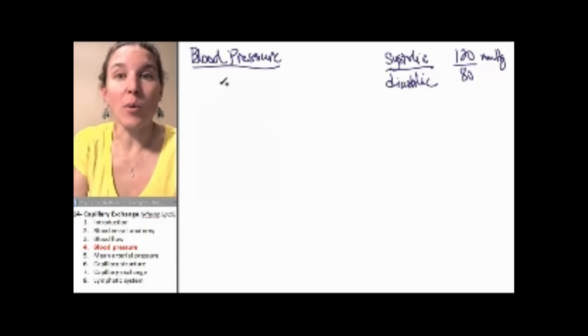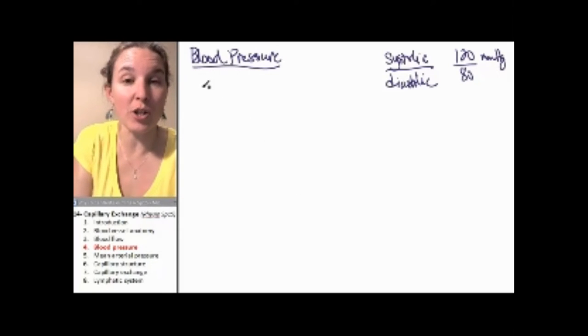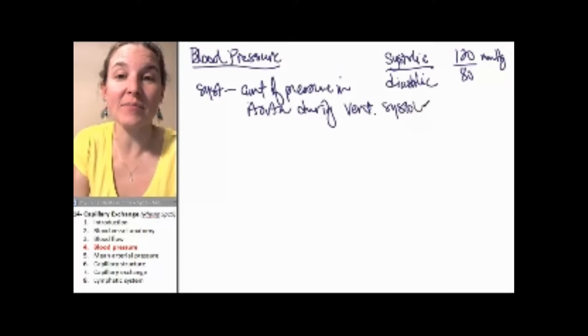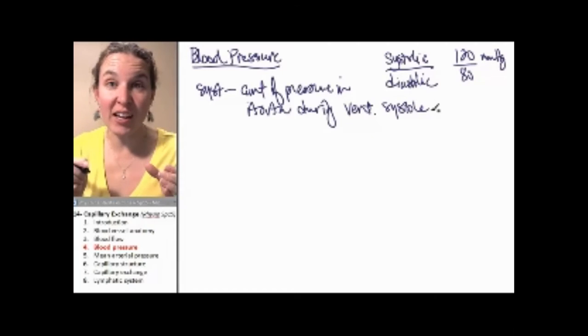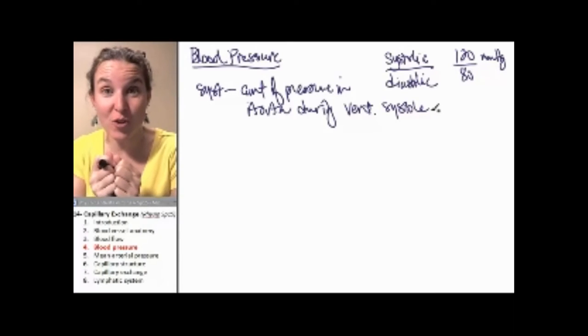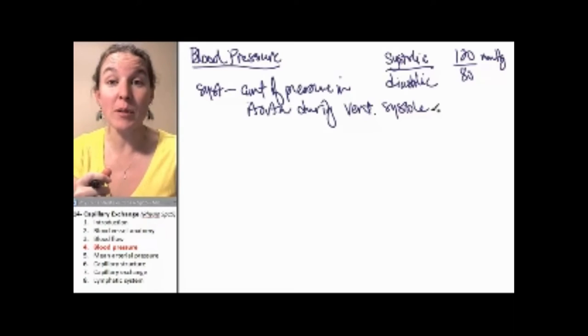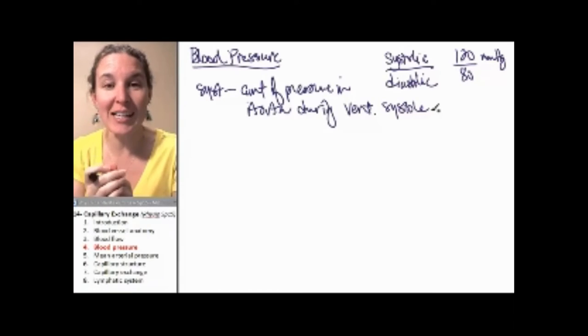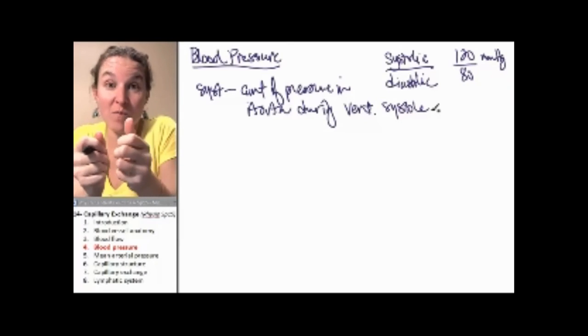Systolic pressure here is an estimate of the amount of pressure in the aorta during what? Ventricular systole. Remember, the aorta is the giant artery that's exiting the left ventricle of the heart and heading to the body. It's the biggest artery in your body and since it's so close to the left ventricle which is the strongest chamber of your heart it's going to be potentially experiencing a lot of pressure. Systolic pressure is the amount of pressure, the estimate of the amount of pressure in the aorta during ventricular systole when the ventricles are contracting.